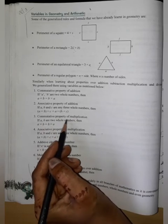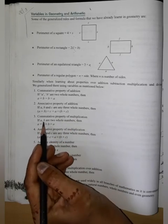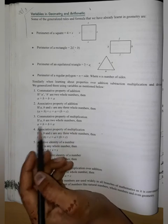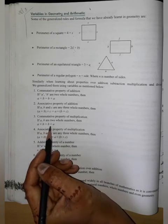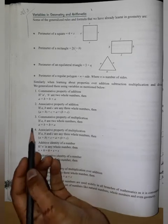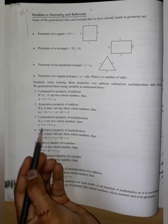Commutative property of multiplication: if A and B are two whole numbers, A into B is equal to B into A. We can multiply in any way, our answer is same.